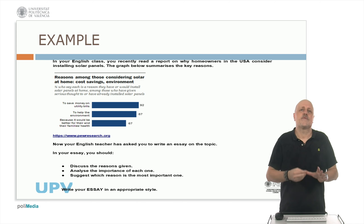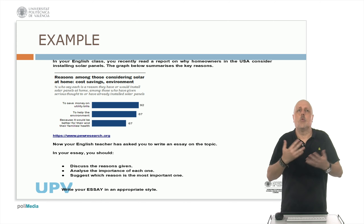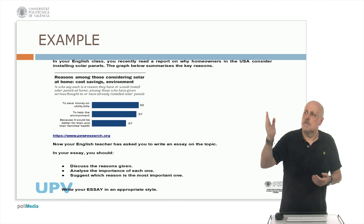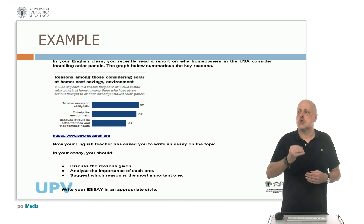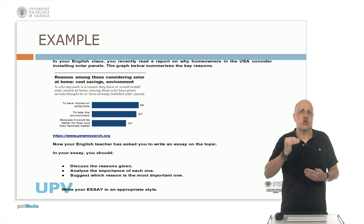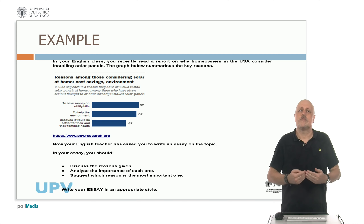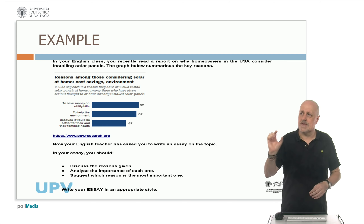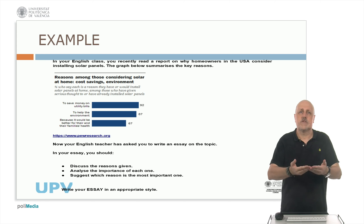The key words are: discuss, analyze, and suggest. You have to do all three things. You have to discuss the three reasons — for example, why it would be good to install solar panels to save money on utility bills, or why many people do it to help the environment. Analyze how important each one of the three is, and then suggest which reason is the most important — that's where your opinion comes in. Bear in mind you're writing for your English teacher, so you have to change the register and style to suit your English teacher. At the bottom it says an appropriate style.